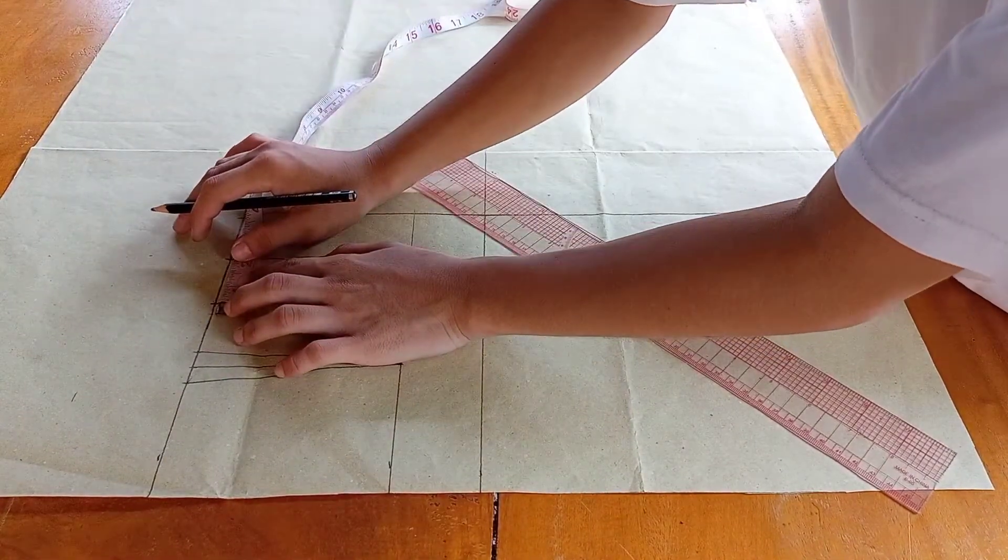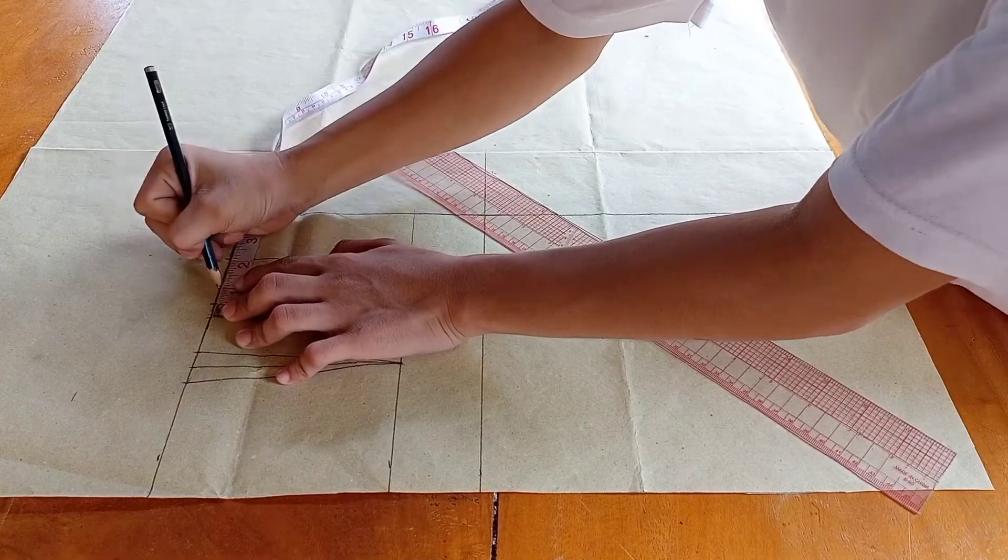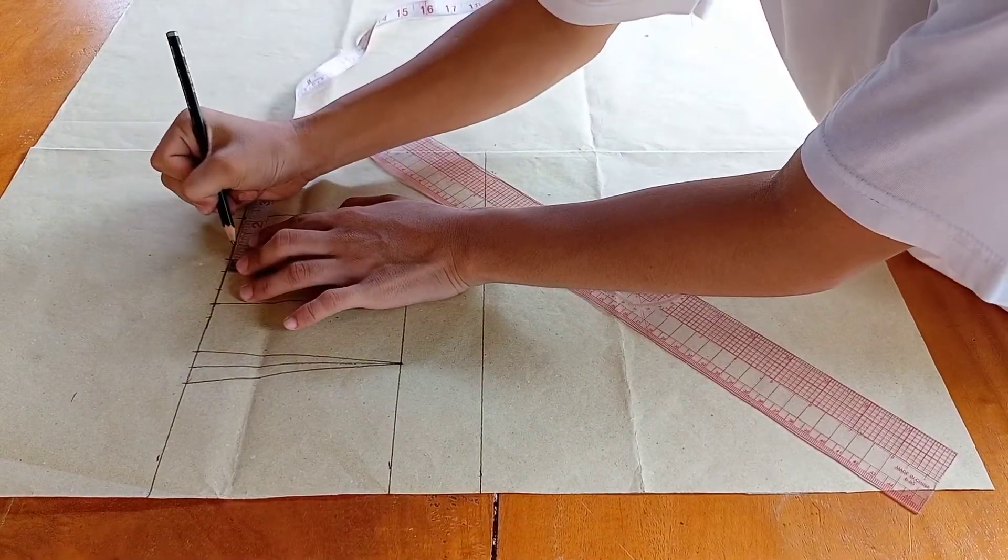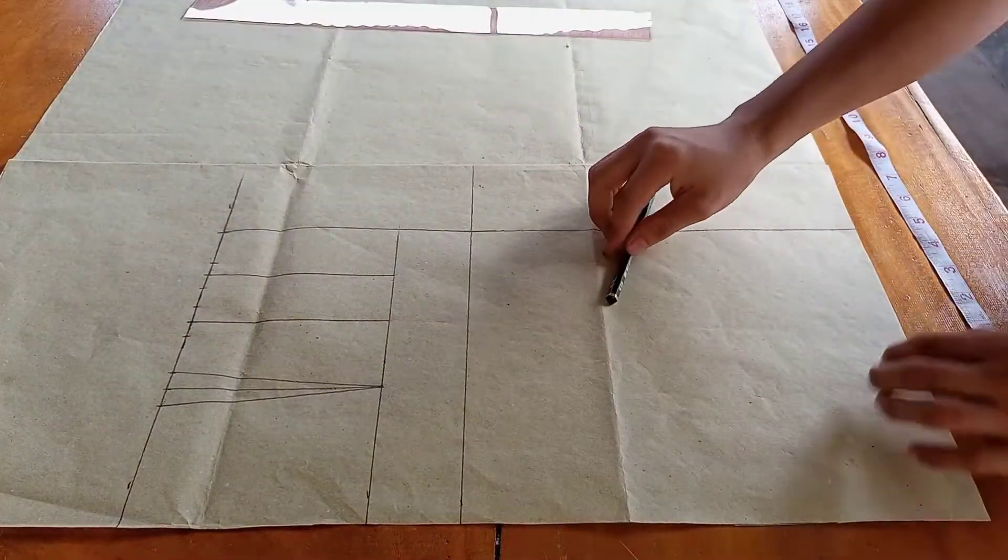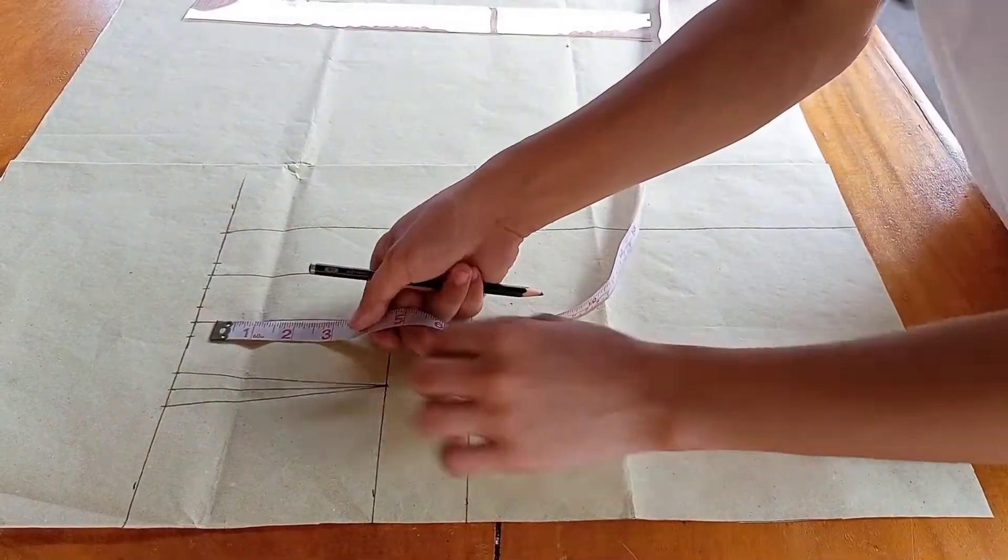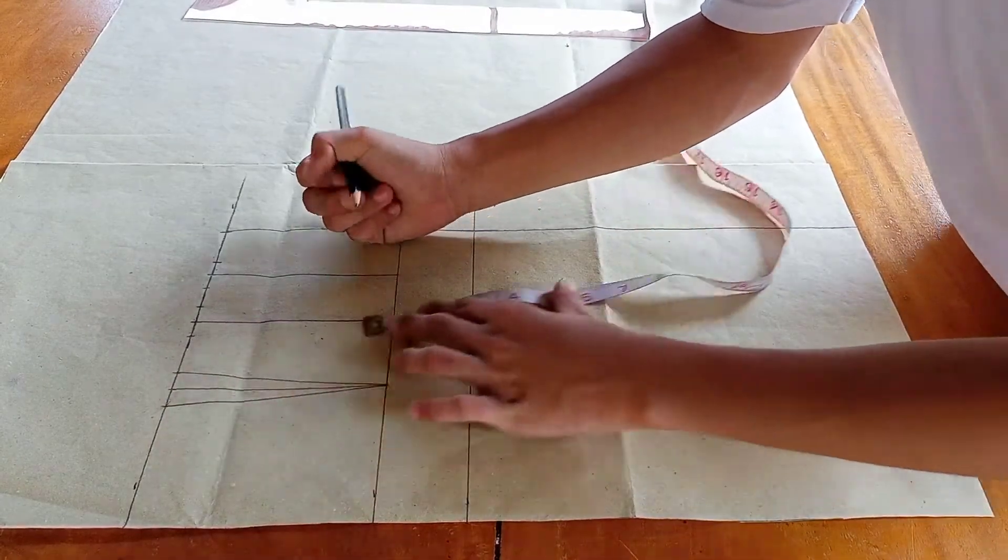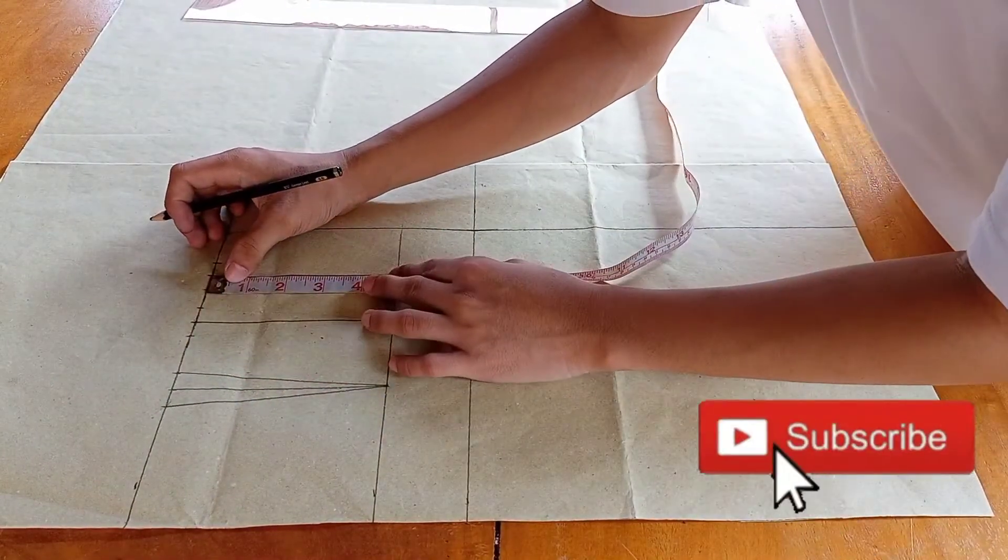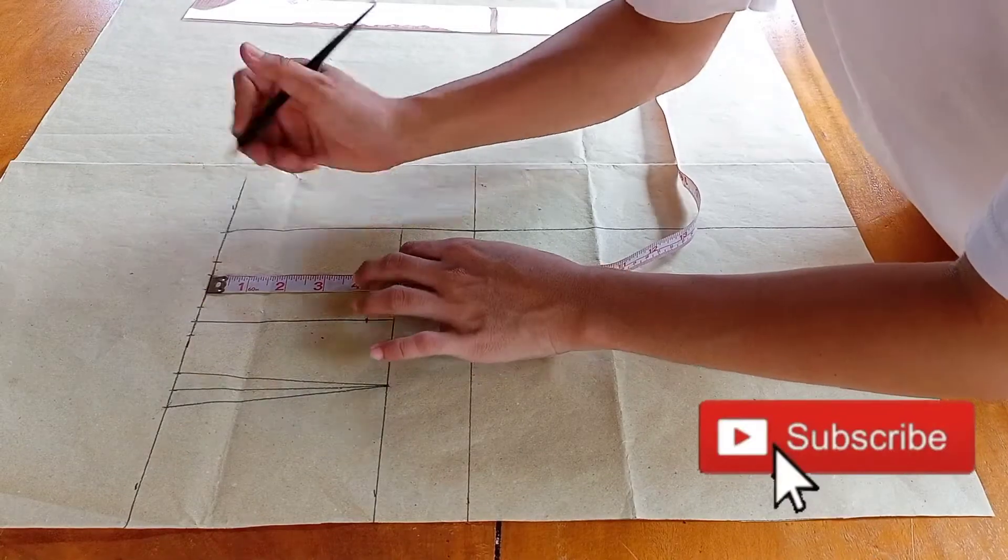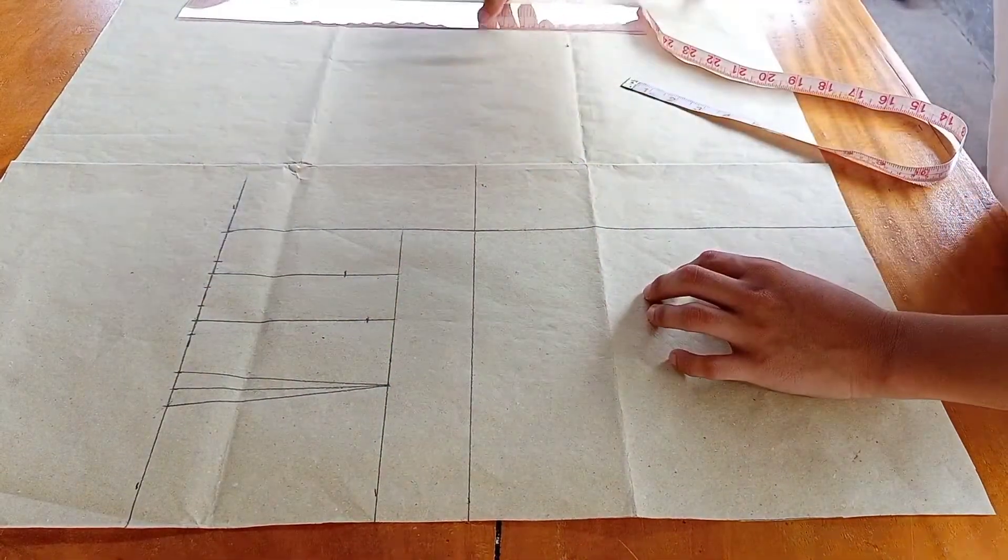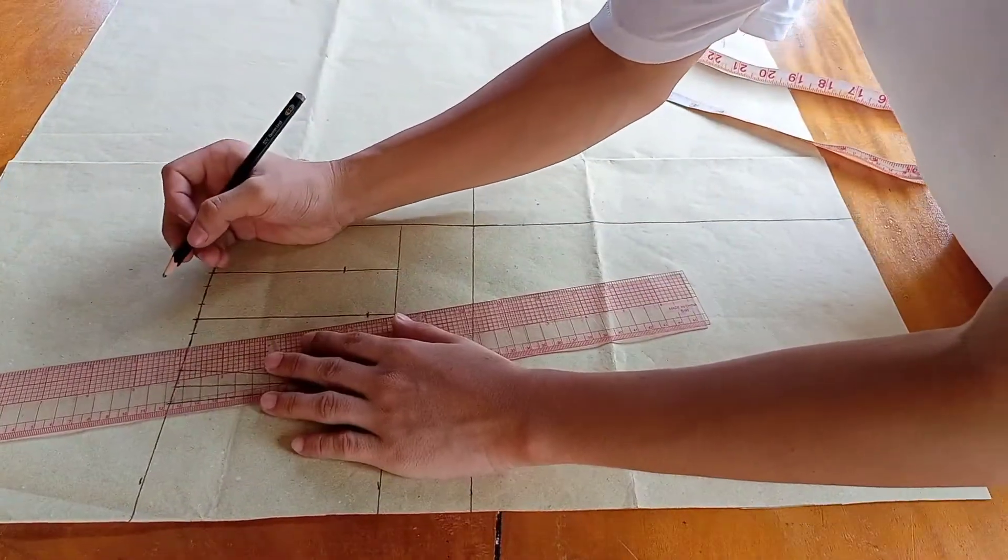Now, measure 1 inch in between the line. Also, 1 inch between the line. For the second dart, measure 4 and 1/4 inches. For the third dart, measure 3 and 1/5 inches. Now, connect the points to create dart intake.